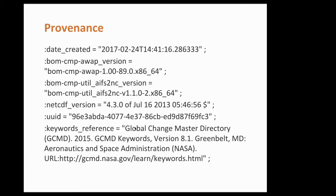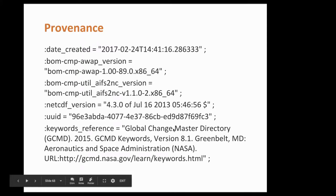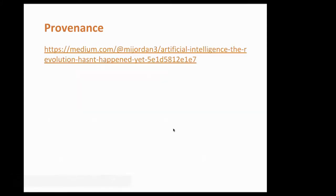This is interesting — this is where the keywords come from. This goes back to the previous issue where we said vocabularies should follow FAIR principles. The keywords we use in our data go back to the GCMD, the Global Change Master Directory, which is administered by NASA and is available at a specific URL. Here's another story about provenance: a blog I came across in the last week.